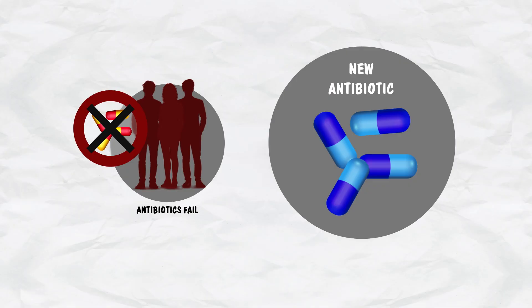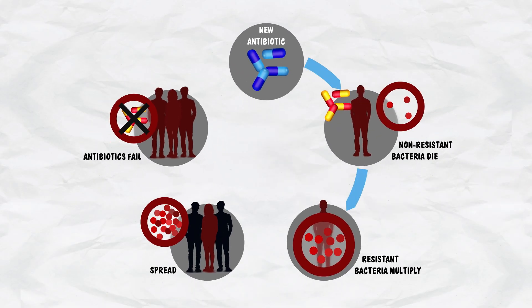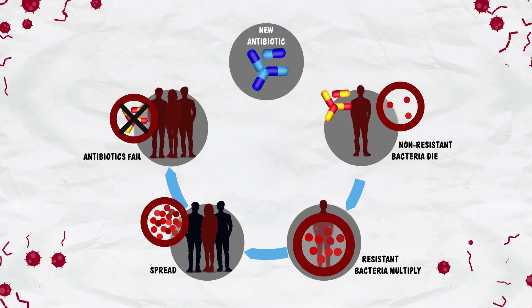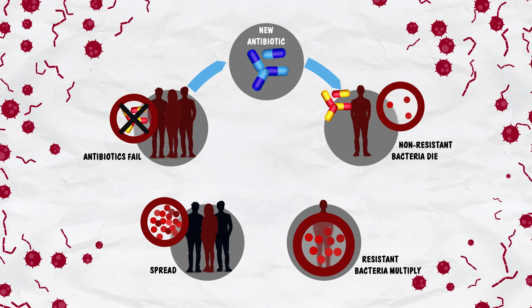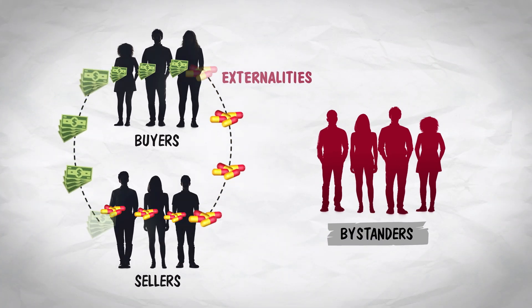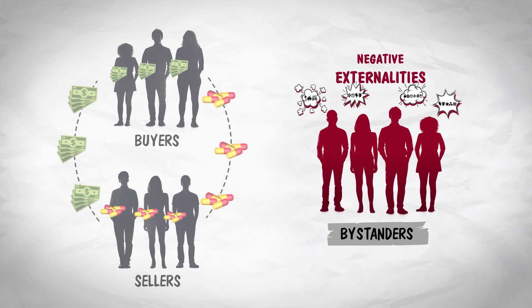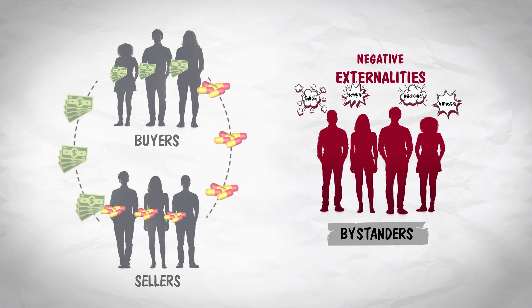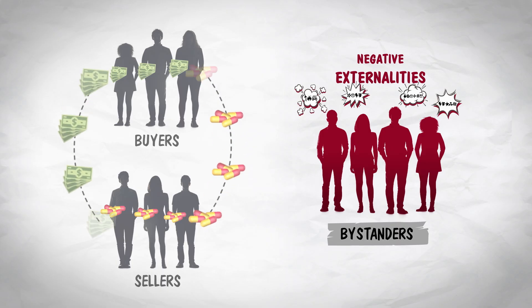In an earlier video, we covered negative externalities, so now let's turn to positive externalities. Our earlier example of a negative externality was how the overuse of antibiotics can lead to antibiotic-resistant superbugs. Bystanders bear an unwanted cost, a negative externality, from others' decisions to use more antibiotics.